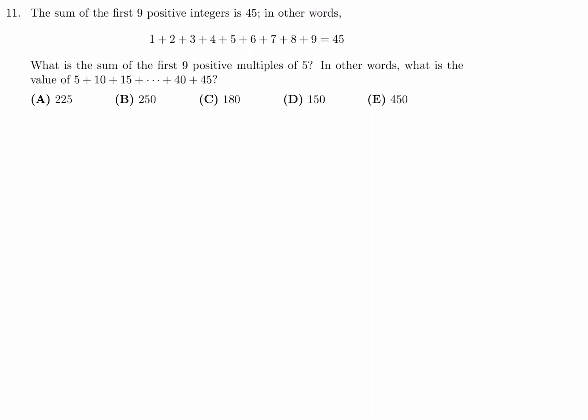The sum of the first 9 positive integers is 45. In other words, 1 plus 2 and so on until 9 is 45. What is the sum of the first 9 positive multiples of 5? In other words, what is the value of 5 plus 10 plus 15 until 40 and 45? Well, just factor out the 5, and you'll get 1 plus 2 plus 3 until 8 plus 9.